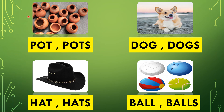Let us do the last questions. Look at this picture, children. One or many? Many, isn't it? So if many, then we add S. Two options are here: no S and S. Which one will we circle? With S — this is the correct answer. Let us circle: P-O-T-S, pots. Now let us look at the second picture.